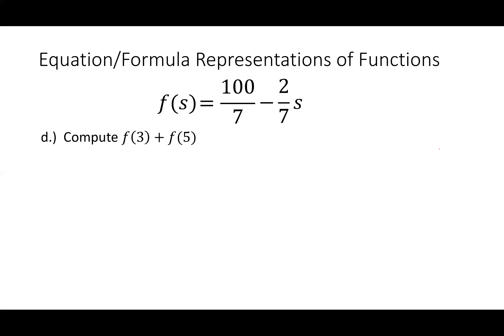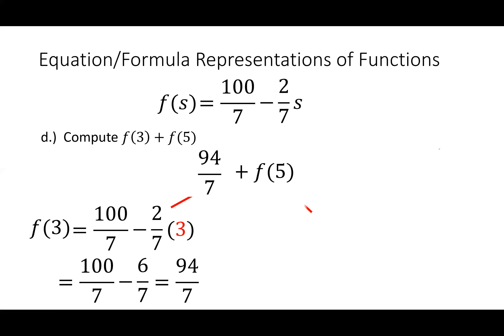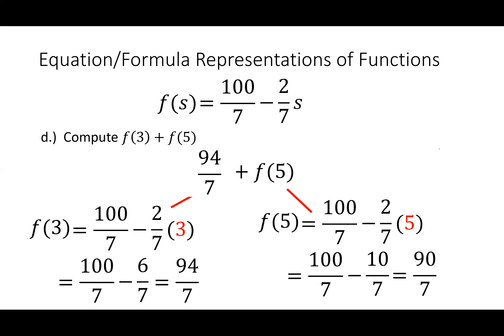Now I want to compute F(3) + F(5). First, compute F(3): everywhere I see S I put 3, and I get 100/7 minus 6/7, which equals 94/7. Now F(5): everywhere I see S I put 5, and I get 100/7 minus 10/7, which equals 90/7. Adding these together gives 184/7. Good mathematical practice is to check for possible reduction, but 184/7 doesn't reduce nicely.